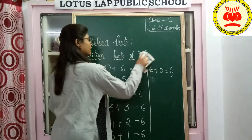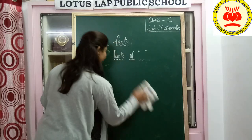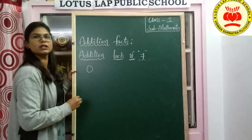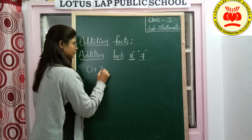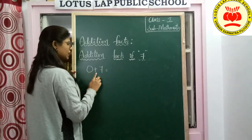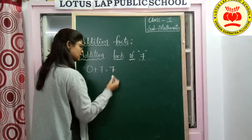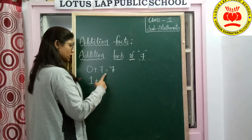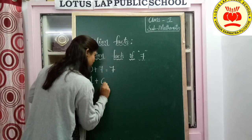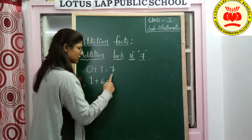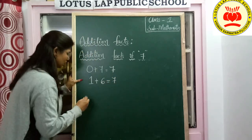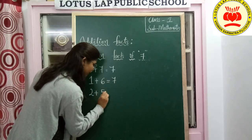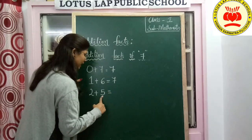Now let's check with 7 — addition facts of 7. Start from 0. 0 plus 7 is 7. Now let's take 1. Here it will be the before number — which comes before 7? 6. 1 plus 6 gives 7 as a result. Next, 2 plus — the order is decreased, so we take 5. 2 plus 5 is 7.